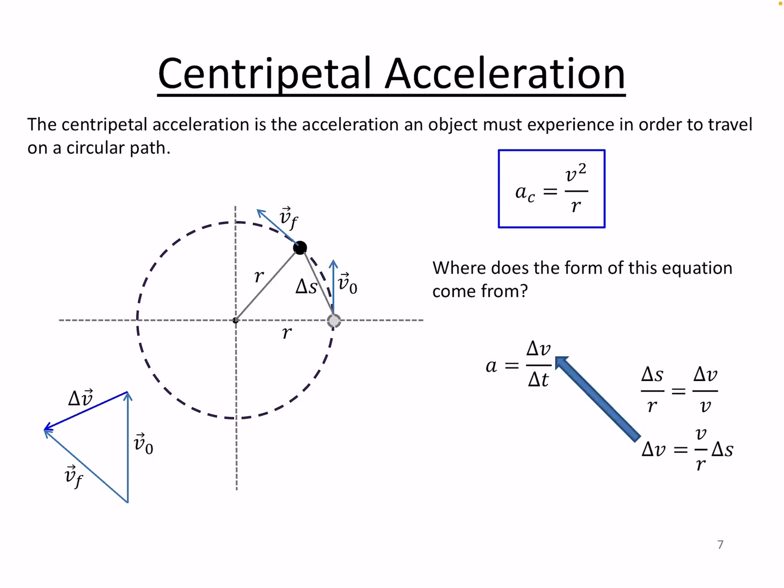So this is the proportion of the sides. So delta V, the magnitude of delta V over the magnitude of those velocity vectors, so the speed that we're maintaining going around the circle. That ratio on the right hand side here is going to be equal to the ratio of the sides of the triangle formed by our position vectors. And that's going to be delta S over R, relating the same kind of side as we are over here.